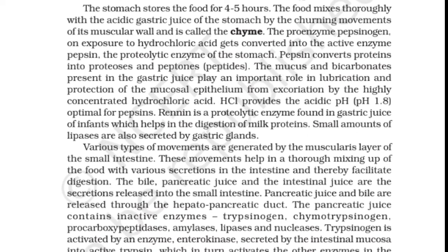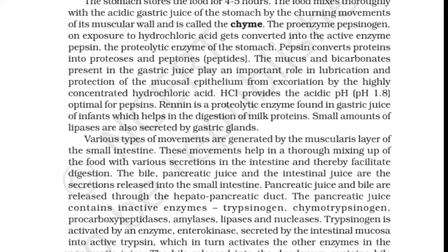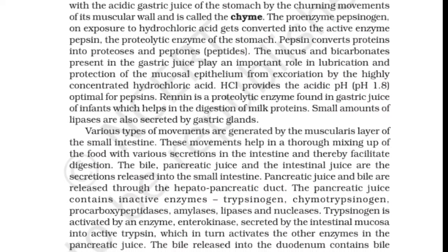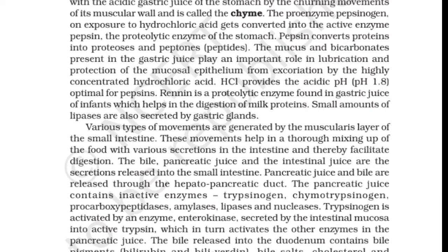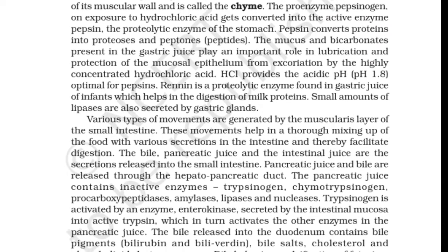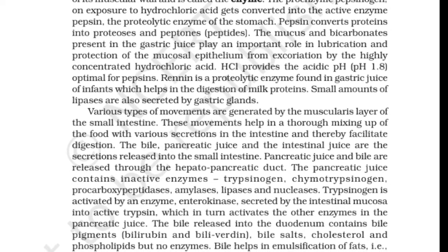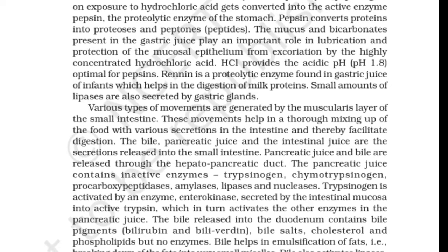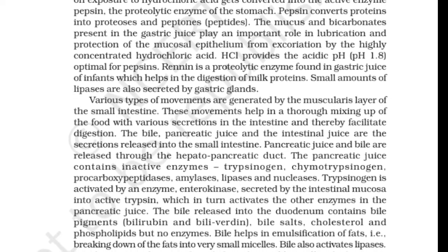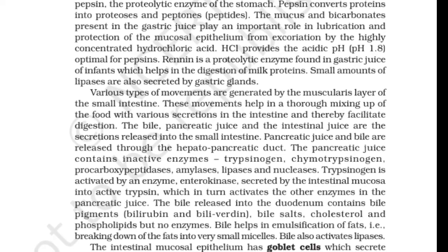Pancreatic juice and bile are released through the hepatopancreatic duct. Pancreatic juice contains inactive enzymes: trypsinogen, chymotrypsinogen, procarboxypeptidases, amylases, lipases, and nucleases. Trypsinogen is activated by an enzyme called enterokinase, secreted by the intestinal mucosa, into active trypsin, which in turn activates the other enzymes in the pancreatic juice.